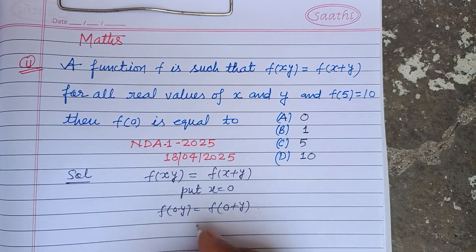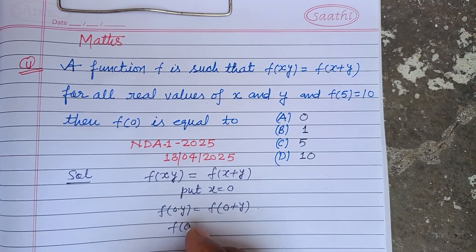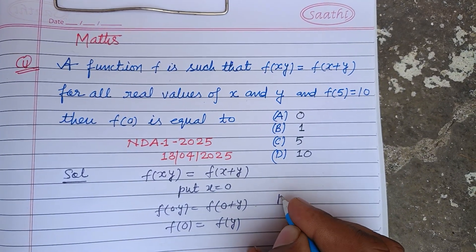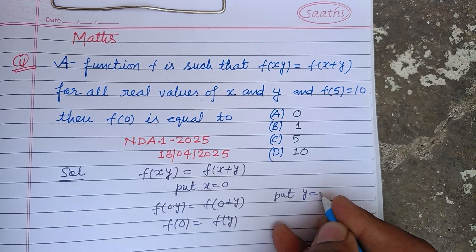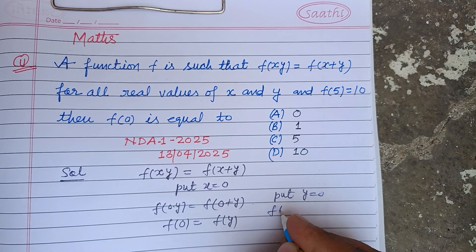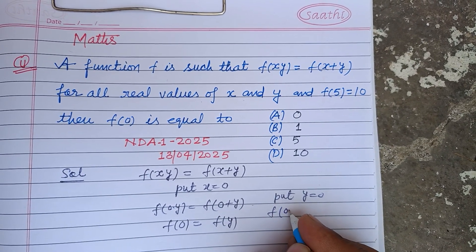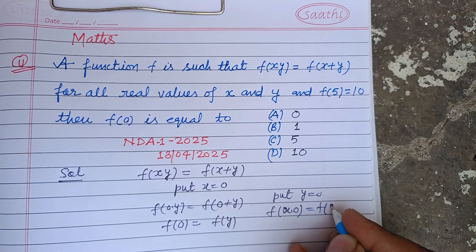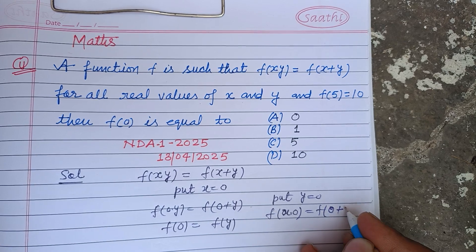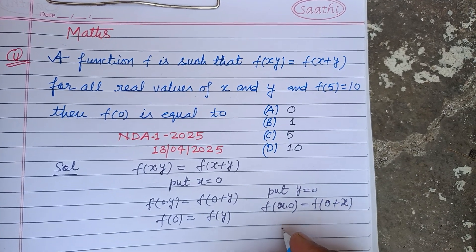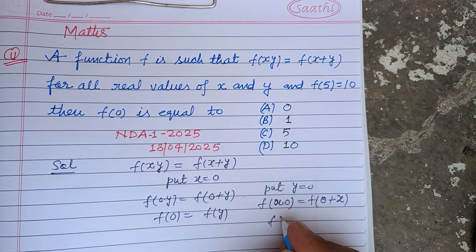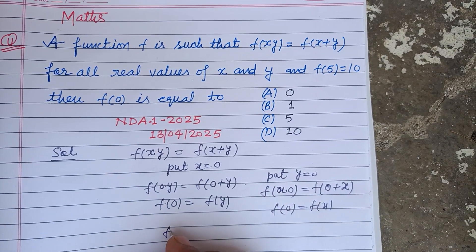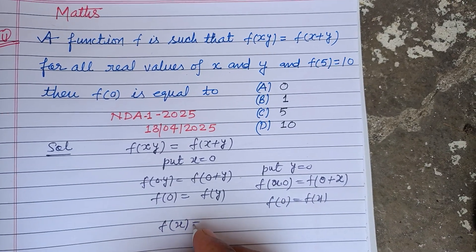So f(0) equals f(y). Now put y equal to 0 in this: f(x·0) equals f(0) plus f(x), so f(0) equals f(x). From here we observe that f(x) equals f(y), which equals f(0).